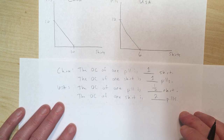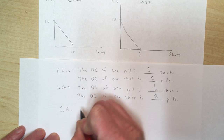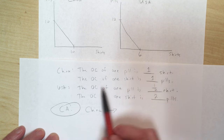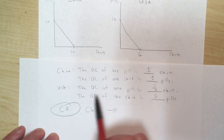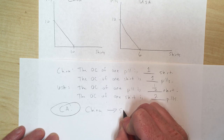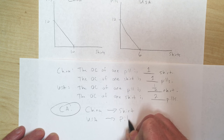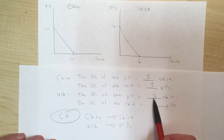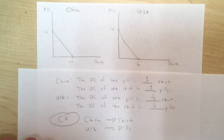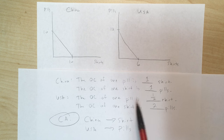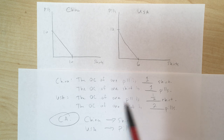Referring back to comparative advantage — the ability to produce at a lower opportunity cost — China has the comparative advantage in shirts because every time they produce a shirt they only give up one pill, whereas the US has to give up two pills. The US has the comparative advantage in pills because every time they produce a pill they only give up half a shirt, while China has to give up one shirt. Remember, low cost is good — a student seeing 'half' might think that's bad, but it means they give up less.